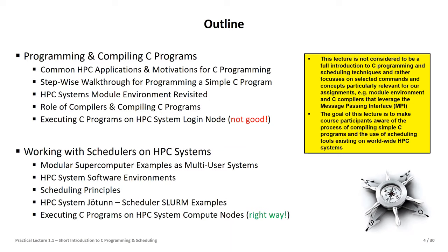A frequently asked question from students is: why C programming in scientific and engineering computing when we have Java or C#? This has something to do with performance, and with the fact that these codes follow specific physical laws and numerical methods that have stood the test of time — created through peer review in science or established in engineering disciplines, growing over decades. That's why even Fortran is still used in scientific computing.